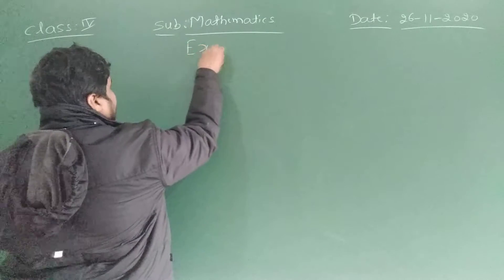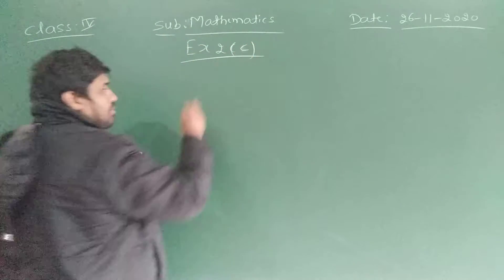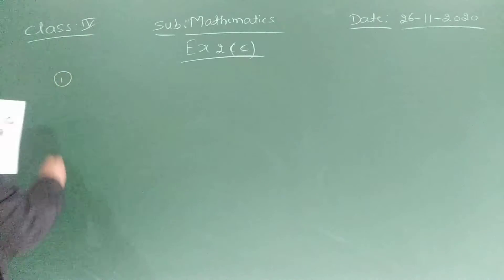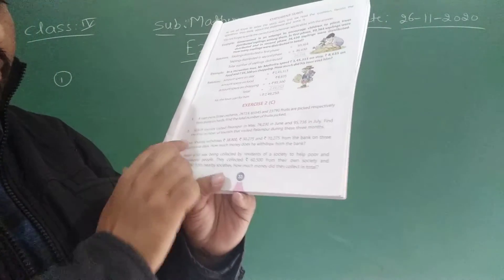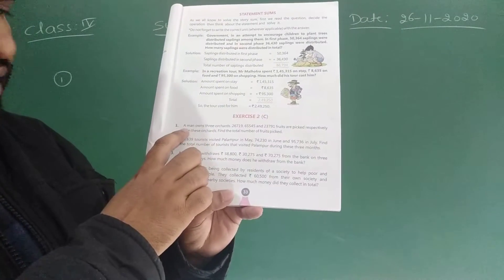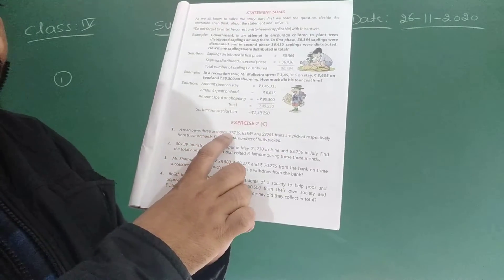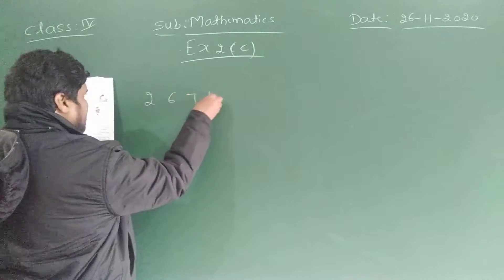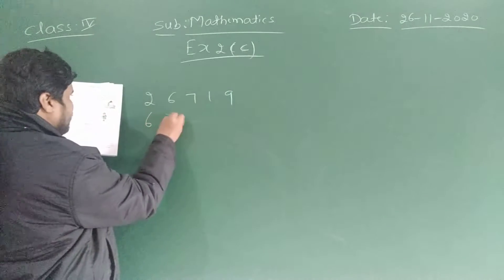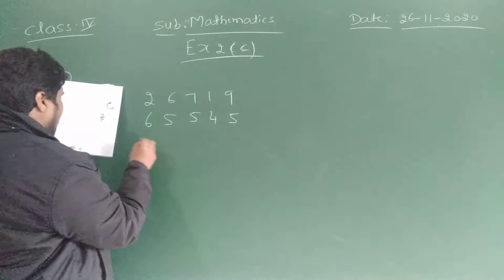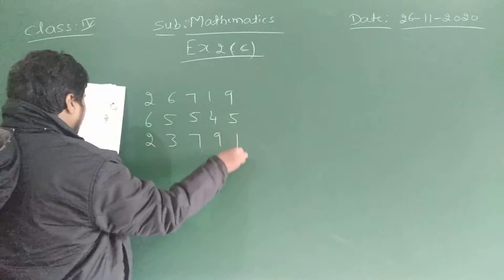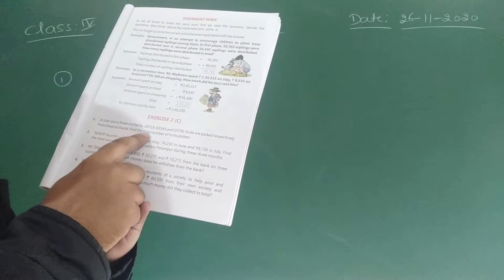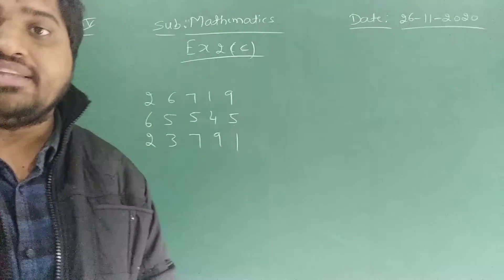See children, this exercise is also entirely based on addition. It is very simple. See the first question. I am not going to write the question — all of you have to open page number 33. That is the first sum. A man owns three orchards: 26,719, 65,545, and 23,791 fruits are picked respectively from these orchards. Find the total number of fruits picked.